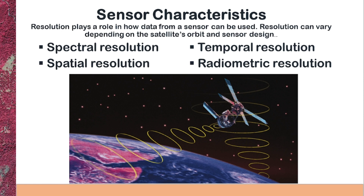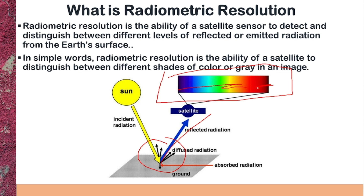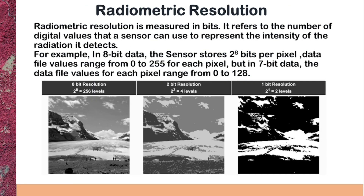Here you can see in the diagram that the sun emits radiations, which strike the earth's surface and are reflected back. This electromagnetic spectrum shows the range of reflected electromagnetic radiations. Radiometric resolution is the ability of a sensor to discriminate between different levels of reflected or emitted radiations. In simple words, it is the ability of a satellite to distinguish between different shades of a color in an image. Radiometric resolution is measured in bits.